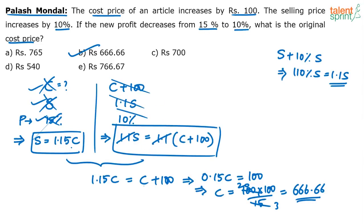You should be working directly with these two equations to get the answer quickly — 666.66, or 2000 by 3. Option B is the answer.